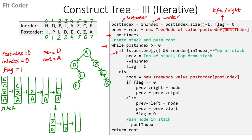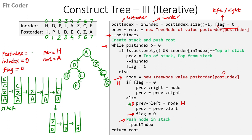In the next iteration, we check if the stack is empty — it is. We come in the else part and create a new tree node with the 0th index of the postorder traversal, which is H. Flag is 1, so we come in the else part: previous is D, so left of D becomes H. Previous becomes equal to left of previous, which is H, and we set flag to 0. We push H in the stack and decrement postindex to -1.